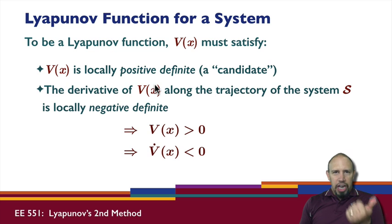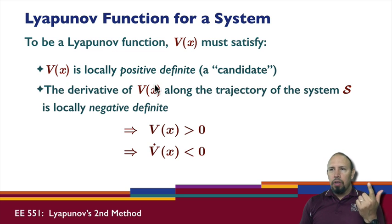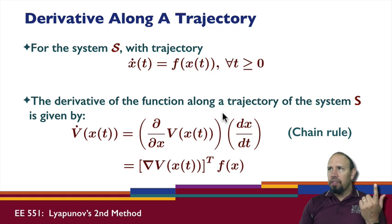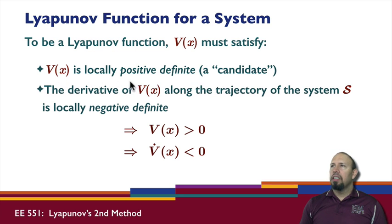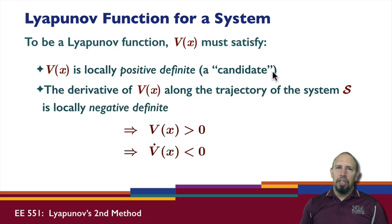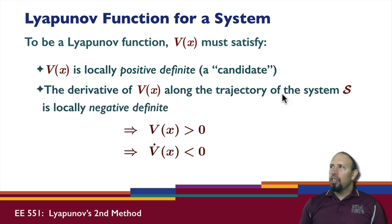So we've defined the trajectory of a system and discussed the time derivative of the function along the trajectory. We now define something called a Lyapunov function. A Lyapunov function v of x must satisfy the following properties: v of x must be locally positive definite. Any positive definite function is a candidate Lyapunov function. To actually become a Lyapunov function, it must also satisfy the next property: the derivative of v along the trajectory of the system must be locally negative definite. So locally positive definite v, and locally negative definite v-dot.